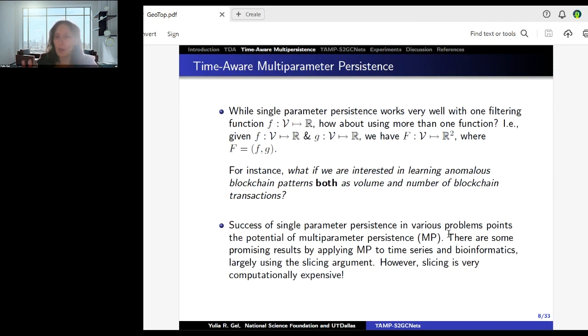After we have extracted these features, usually in a twice differentiable form, then we can bring it into deep learning. Why is twice differentiability important? Because then we can run the convolution operators within deep learning. Since I would say 2016, 2017, there have been many papers that focus on single parameter persistence. That is when we pick up one filtering function, for example, going back to art, it can be just color. Then get persistent image or other forms and incorporate that within machine learning and deep learning models.